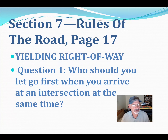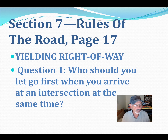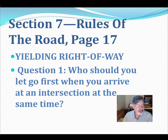Section 7 — this is section 7 in the Driver's Handbook. Rules of the Road, page 17. This is under the section Yielding Right of Way.